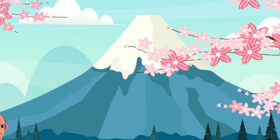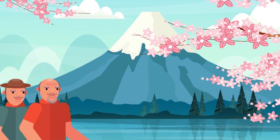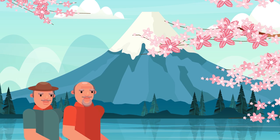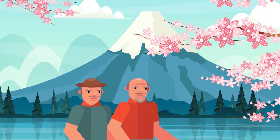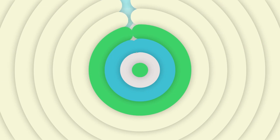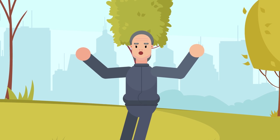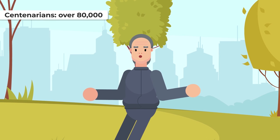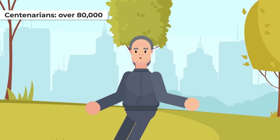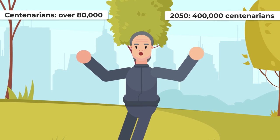In 2018, Japan had the second-highest life expectancy in the world. The population aged 90 and over had reached 2 million in 2017. Japan also has a record number of centenarians, over 80,000. This figure is expected to rise to 400,000 by 2050.